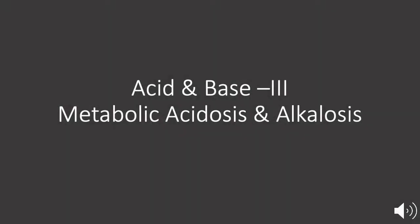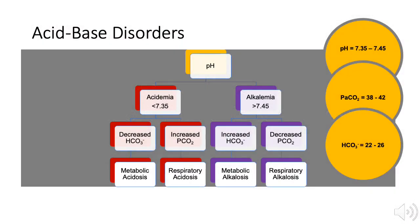When an acid-base derangement is driven by carbon dioxide, it is termed respiratory. When the process is driven by bicarbonate, it is termed metabolic. A process that leads to the accumulation of acidic ions is called an acidosis. A process that leads to the accumulation of basic ions is called an alkalosis.